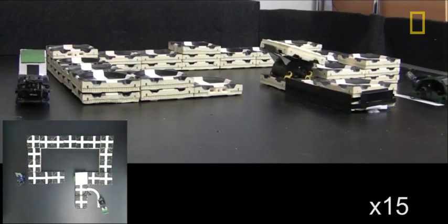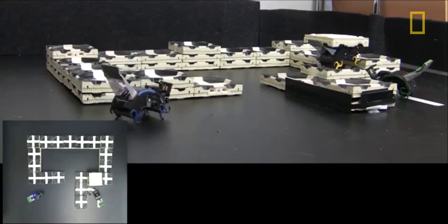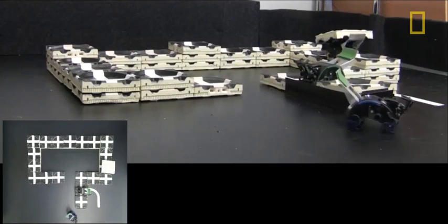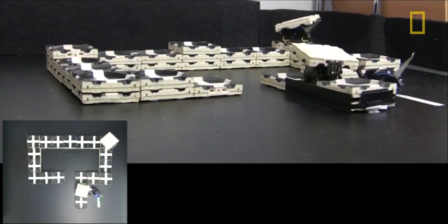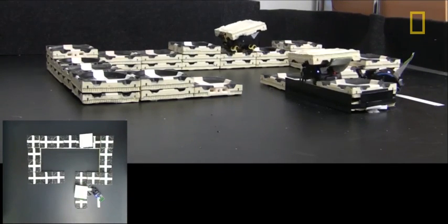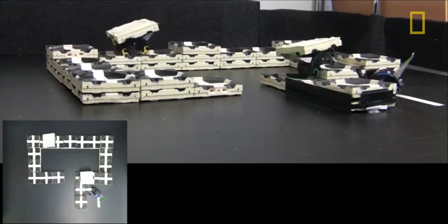So here we've sped up 15 times. The robots are actually moving at about 2 1/2 feet a minute. So the main window is showing sort of a three-quarter view of the three robots building the structure. In the lower left is an inset showing a top view of the same thing.